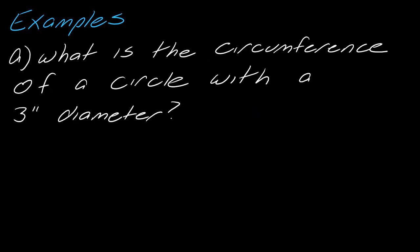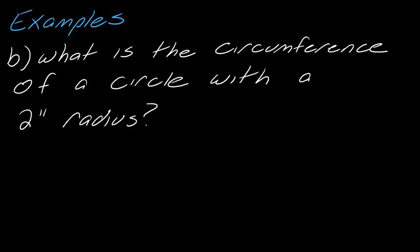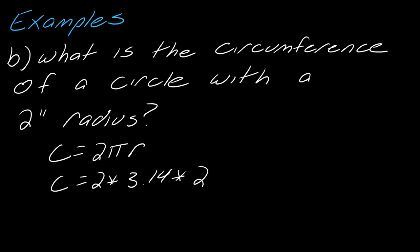Let's do a few calculations. What is the circumference of a circle with a three-inch diameter? Since we have the diameter, I'll use c equals pi times d. Entering that: 3.14 times 3 gives 9.42 inches. For the next example: what is the circumference of a circle with a two-inch radius? I'll use 2·pi·r — two times 3.14 times 2 — and I get 12.56 inches.